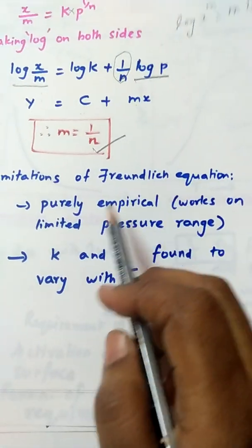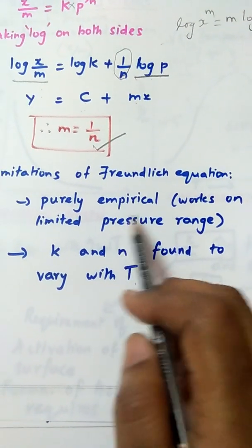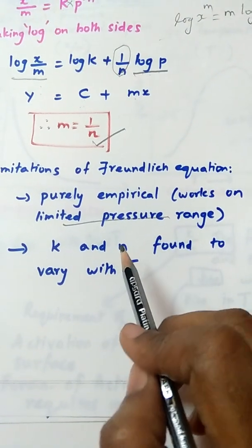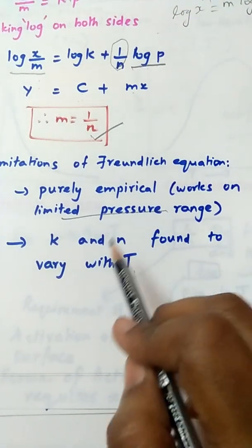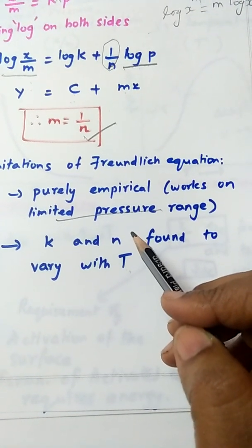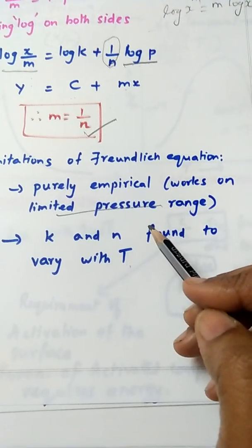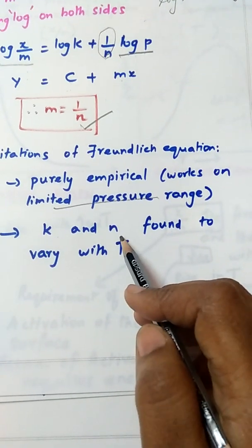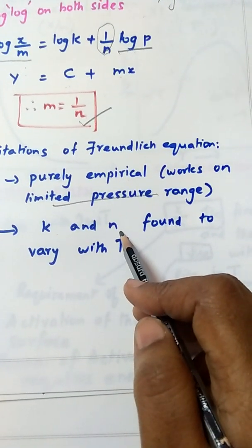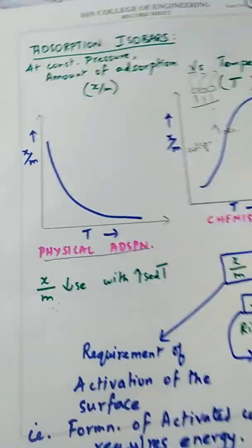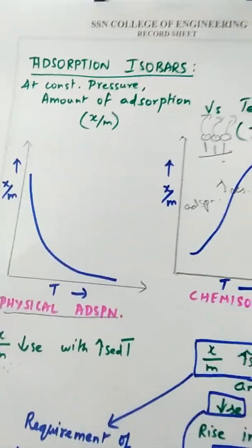The limitations of the Freundlich equation: first, it is purely empirical — it is studied for a limited pressure range, meaning at one atmospheric pressure they found adsorption increases proportionally, making it empirical. Second, k and n are represented as constants, but they are found to increase with temperature. These are the two disadvantages or limitations of Freundlich adsorption isotherms.